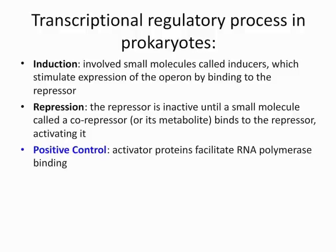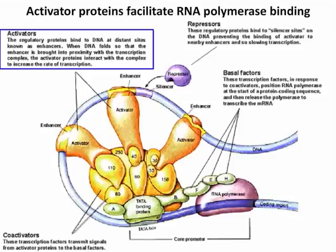The next process is positive control — activator proteins that facilitate RNA polymerase binding. Pay attention to the top left box talking about activators. These are proteins that facilitate the binding of RNA polymerase. The faster RNA polymerase binds to the promoter region, the faster you can make mRNA — that's what activators do.